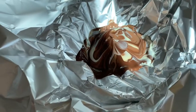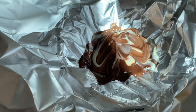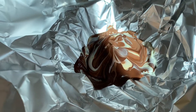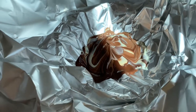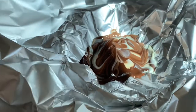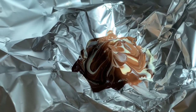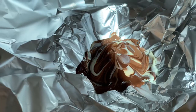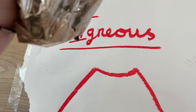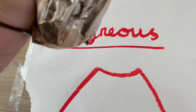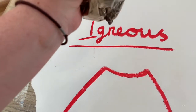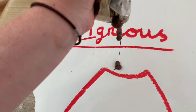Once upon a time, underneath the earth's crust there was molten rock — hot, hot molten rock — heated by the earth's core to temperatures up to 1000 degrees Celsius. When magma reaches the surface of the earth it comes out from underneath the ground and is called lava.